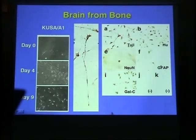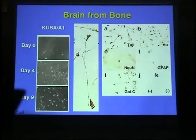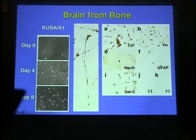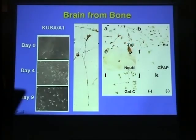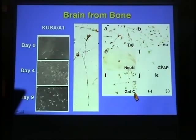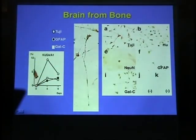The stroma cells with neuronal-like long processes were positive for the neuron-specific marker TUJ1, while cells without any long processes were negative for this marker. Immunohistochemical analysis on these differentiated cells showed positivity for neuron-specific markers such as TUJ1, HU, and NUN; the astrocyte-specific marker GFAP; and the oligodendrocyte-specific marker galactocerebroside. The percentage of marker-positive cells was less than 10%.